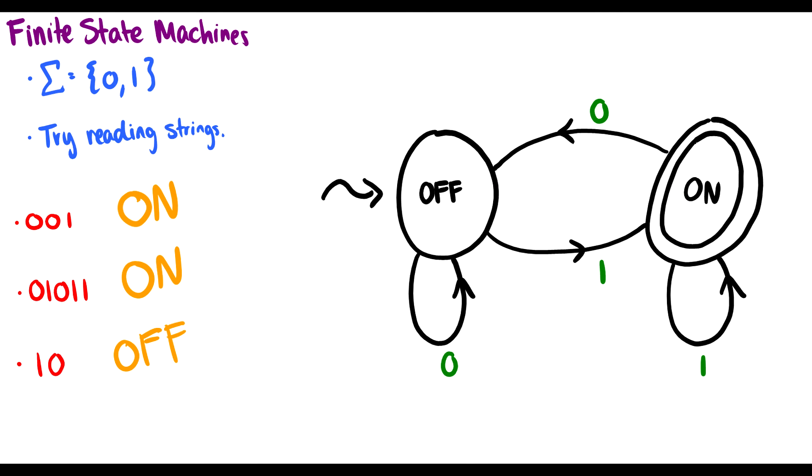These finite state machines represent languages. What is the language here? Well, if a string ends in a 1, the machine says it's on and it's good. It's accepted it. It has this double circle here which means it accepts it. So it accepts strings that end in 1s. If it ends in a 0, it's off.